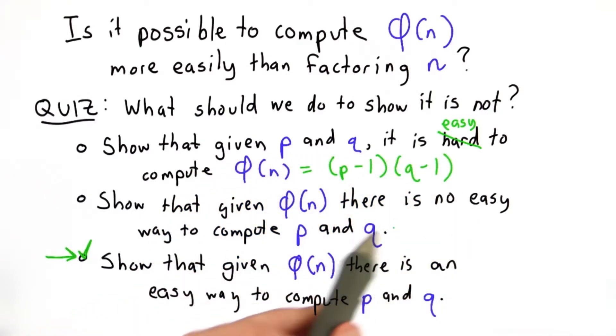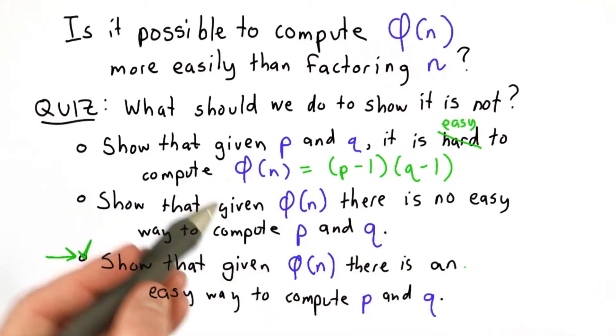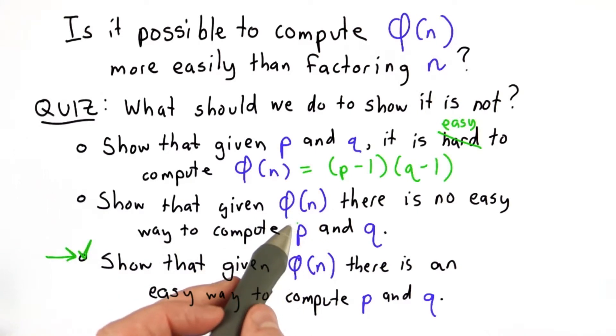The second answer is not true, but if it were, it wouldn't help us prove that RSA is hard. It would just show that there might be an easier way to compute the totient of n than there is to factor, so this would be damaging for our security proof.